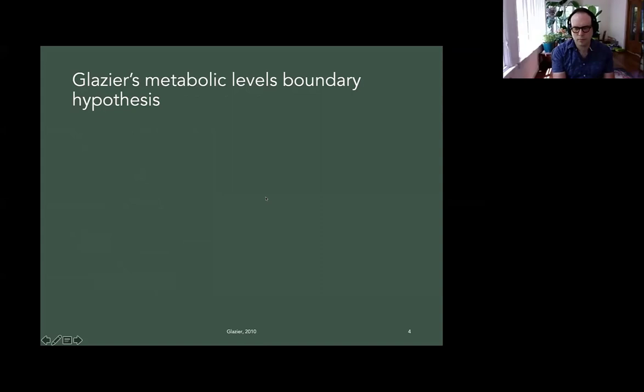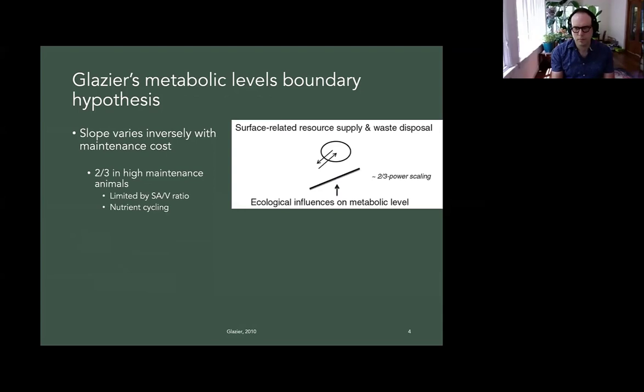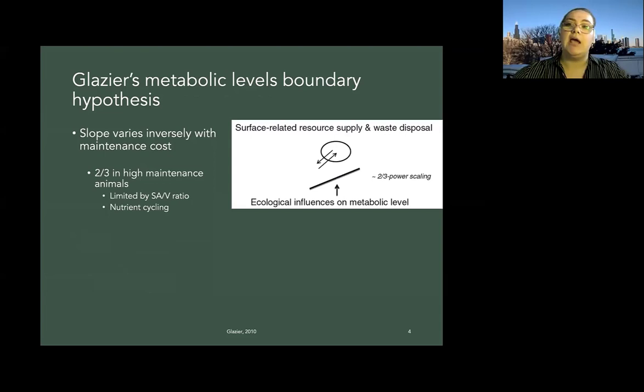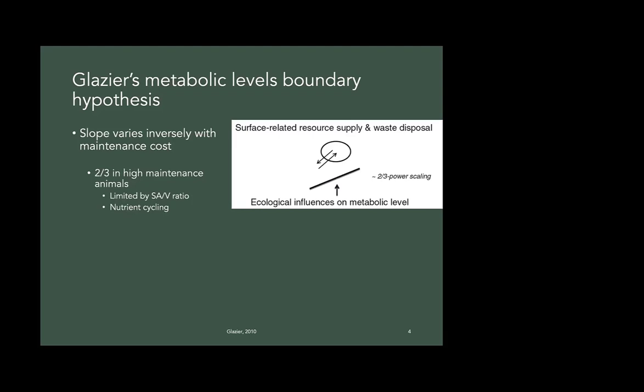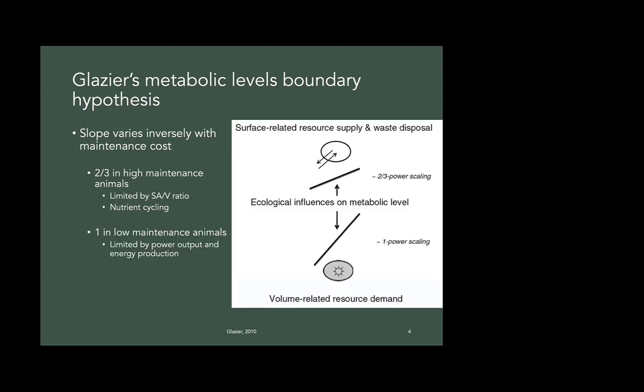However, Glazier's metabolic levels boundary hypothesis tries to take into account the differences between organisms. And so what it is saying is that the slope varies inversely with maintenance costs. So when we have an organism that has a higher metabolic rate or a high maintenance animal with higher metabolic rates, we should see scaling at about 0.66 or two thirds. And that's because it's limited by the surface area to volume ratio and nutrient cycling. So it's limited by how fast things can diffuse in and out and the size of the animal. On the other end, we have low maintenance animals, which will scale more towards one. And that's because they are not limited by surface area to volume ratio. They're limited instead by their power output and energy production. So their mitochondrial rate, metabolic rate.